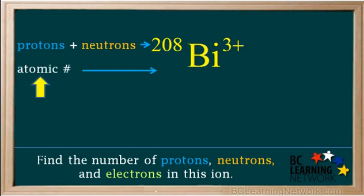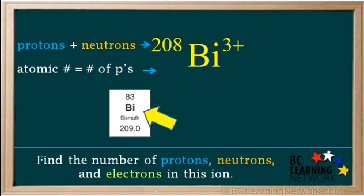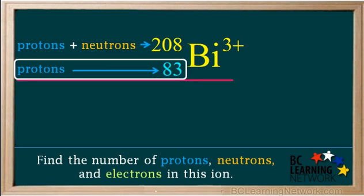Next find the atomic number of bismuth, which is equal to the number of protons, and write it here on the bottom left of the symbol. Find bismuth on the periodic table. Its atomic number is 83, so write 83 here. So the number of protons in this ion is 83.